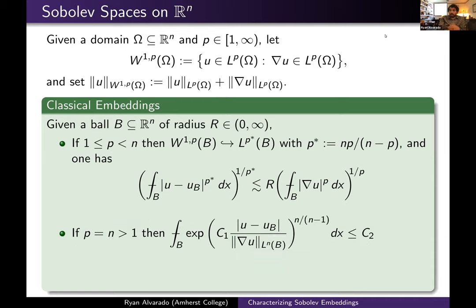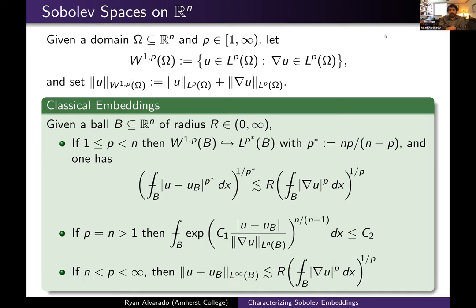When p equals n in this critical case, we get something slightly different: exponential integrability of the function U, sometimes referred to as the Trudinger inequality. And when p is larger than the dimension, the function U turns out to be Hölder continuous of order 1 minus n over p, which follows from the corresponding inequality.